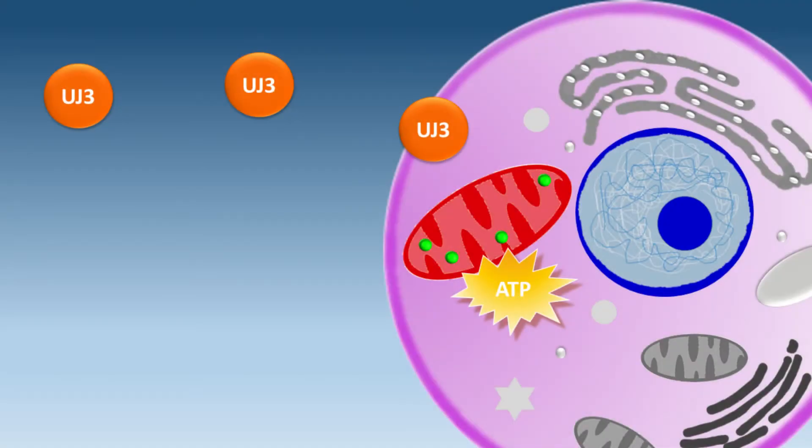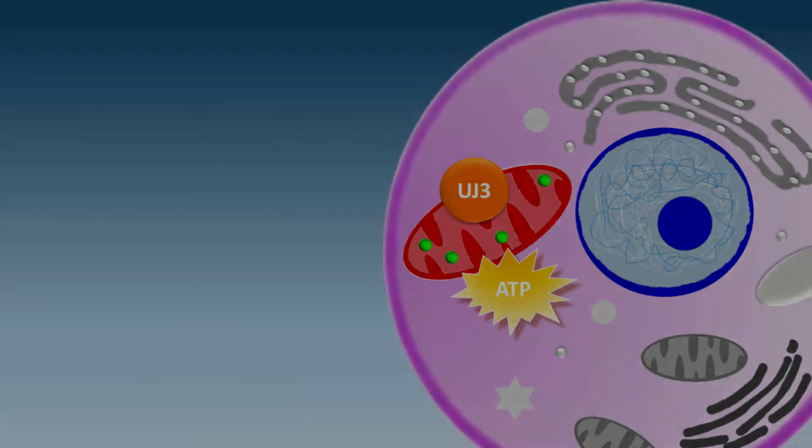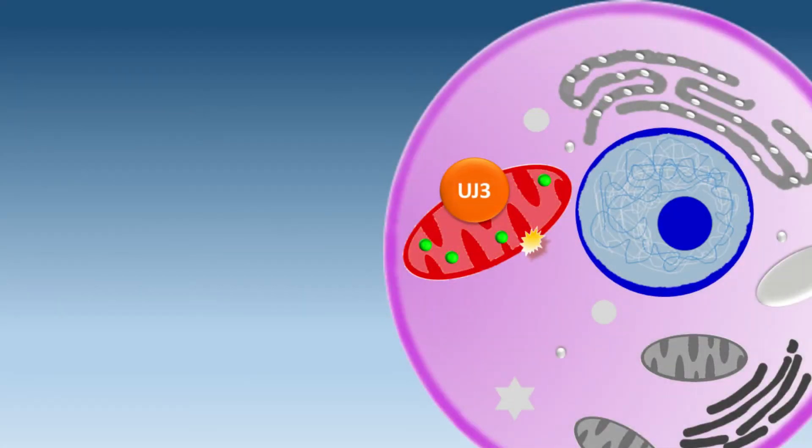Now we look at how UJ3 triggers apoptotic cell death. UJ3 goes through the plasma membrane, shown in purple, and enters the cell. Then it goes through the membrane of the mitochondria, shown in red. Once UJ3 is inside the mitochondria, it slams the brakes on energy production, so less ATP to fuel tumor growth is produced.